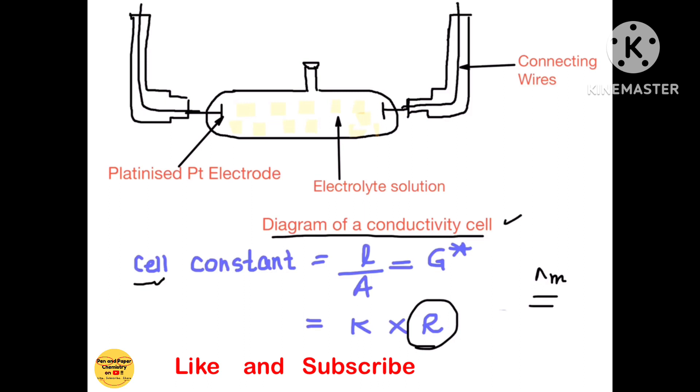Coming to the parts of a conductivity cell. We have a glass tube here. This glass tube is filled with the solution of the electrolyte whose conductivity is to be measured. We have two electrodes over here. These are platinized platinum electrodes. Platinized means coated with a very fine powder of platinum. It increases the surface area and also reduces the polarization effect.